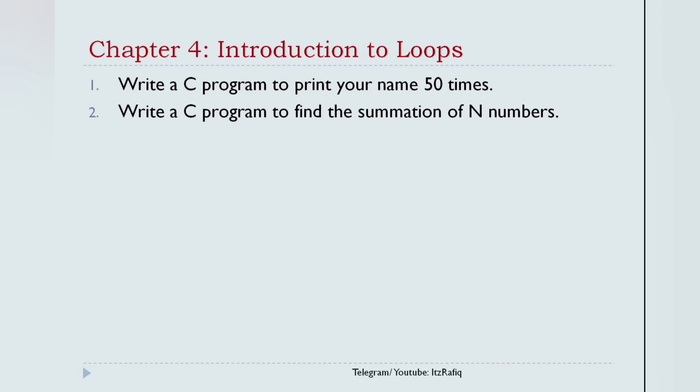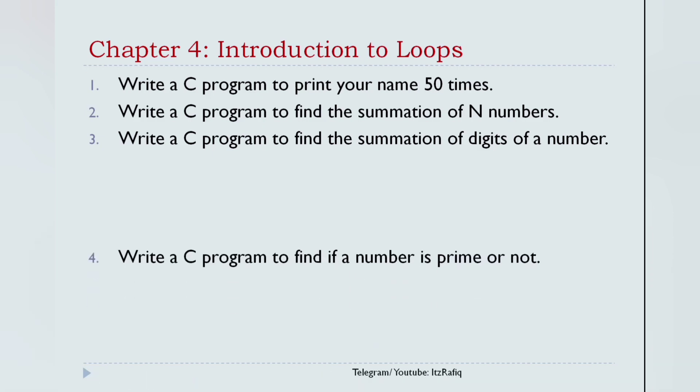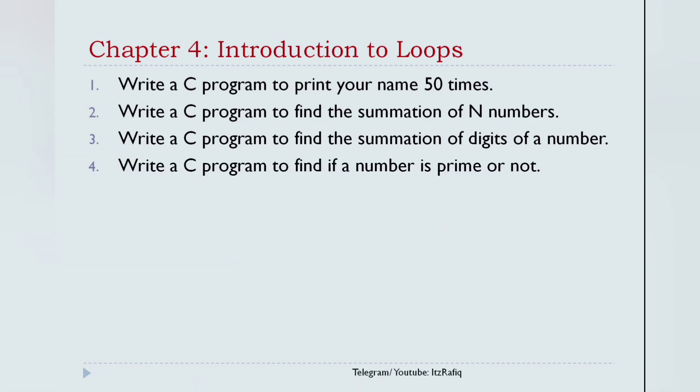After that, write a C program to find the summation of n numbers. Like if the user enters 10, then it should be sum 1 plus 2 plus 3 plus 4 plus 5 plus 6 plus 7 plus 8 plus 9 plus 10, that answer it should print. Then write a C program to find the summation of digits of a number. Suppose if the user entered the digit as 120, then it should add 1 plus 2 plus 0. Then write a C program to find if a number is prime or not. So these are important for chapter 4.